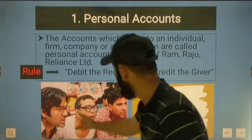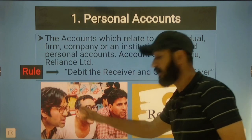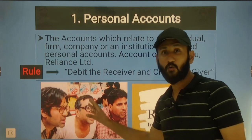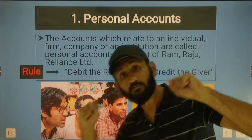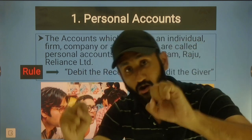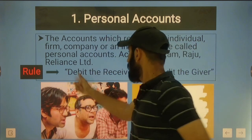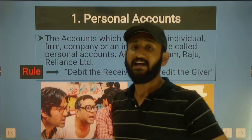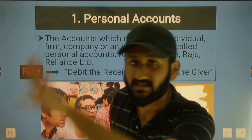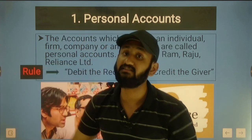All people's accounts - Raju, Shyam, Baburao Bhaiya - all their accounts are called personal accounts. And the rule of personal account is: debit the receiver and credit the giver.